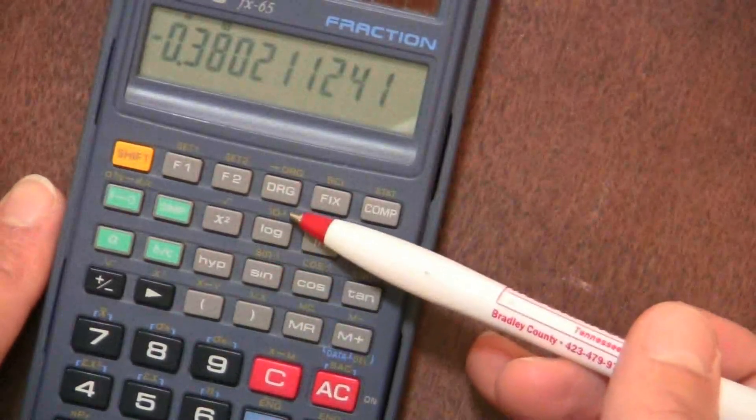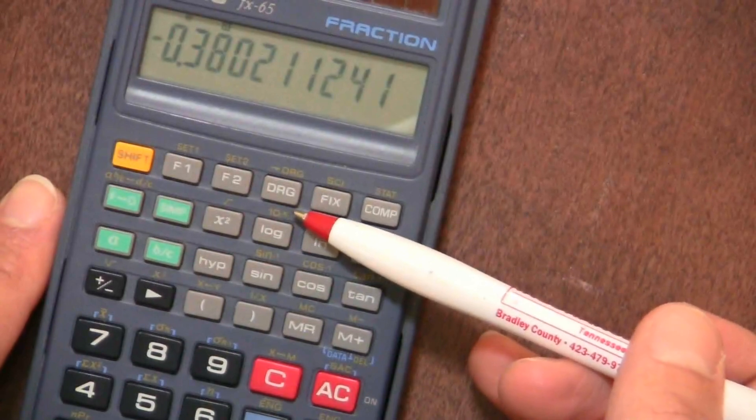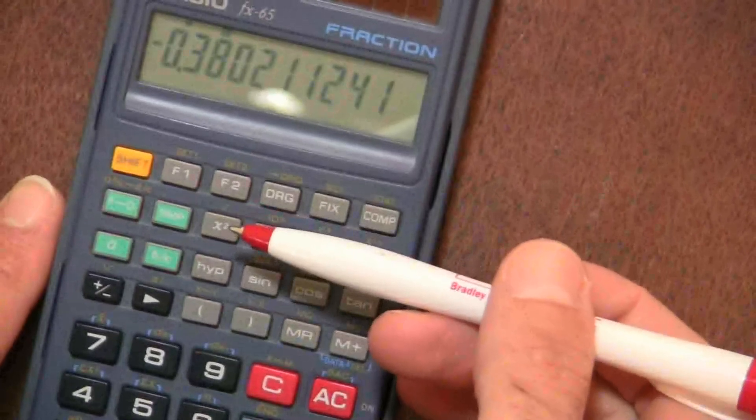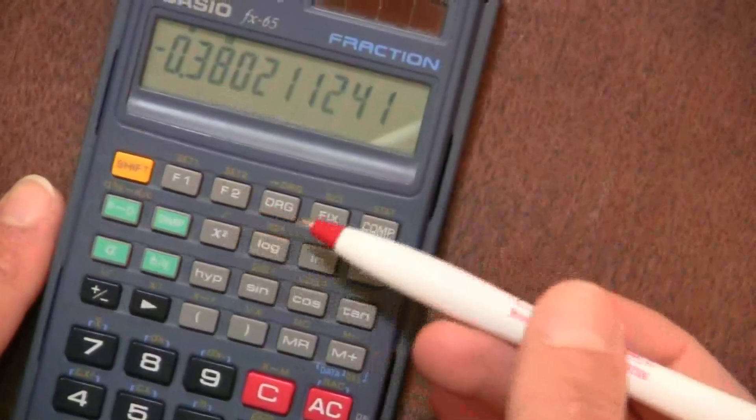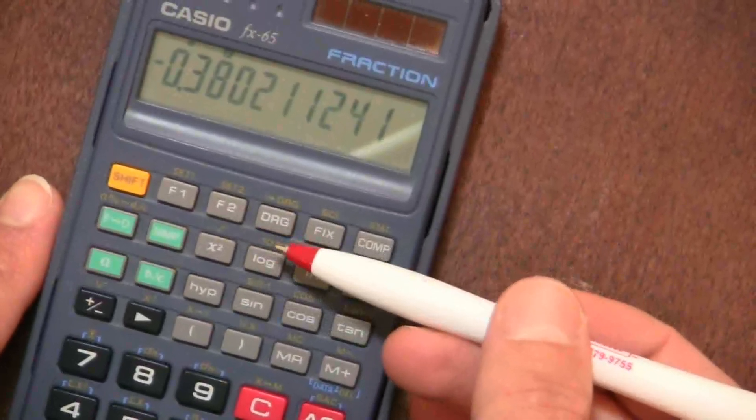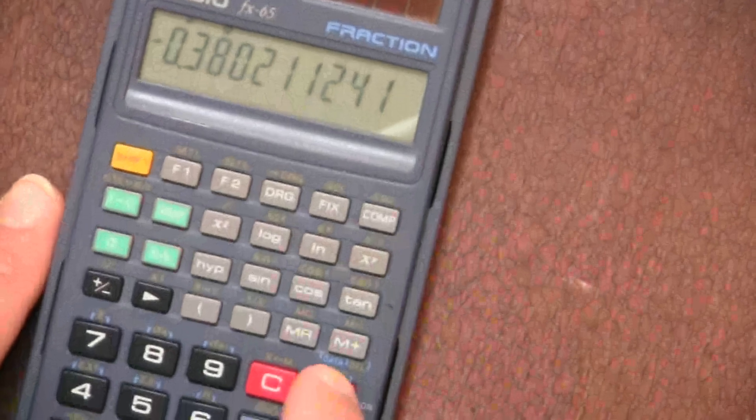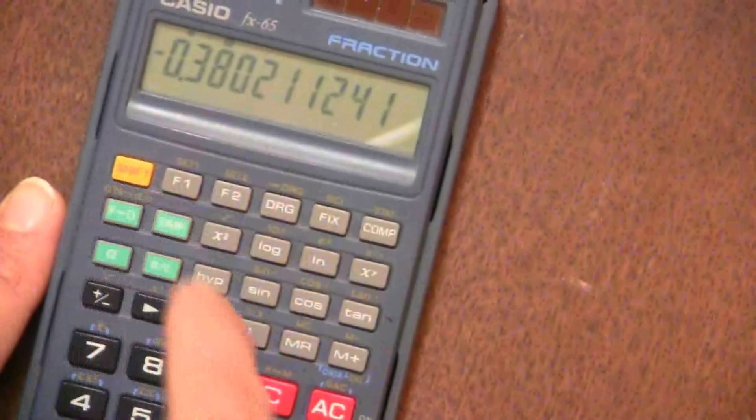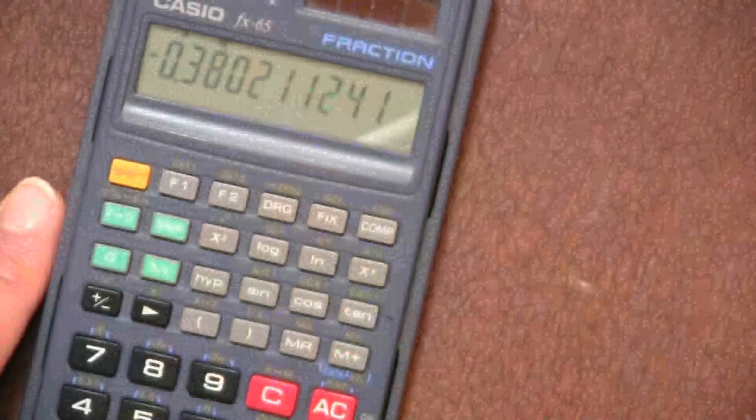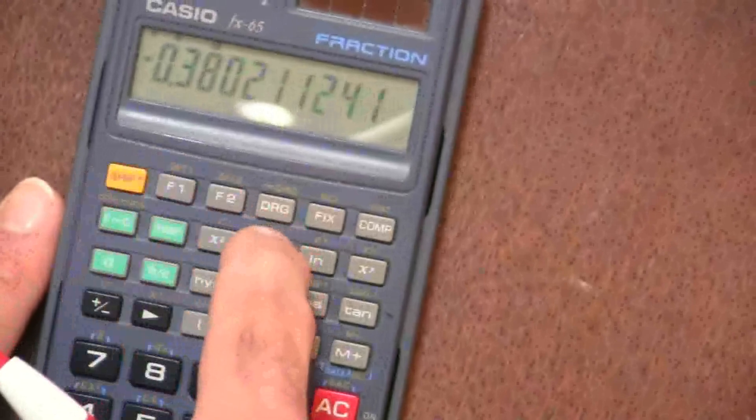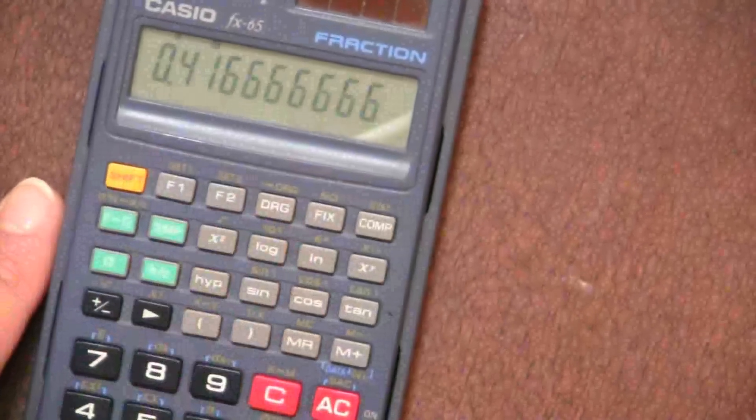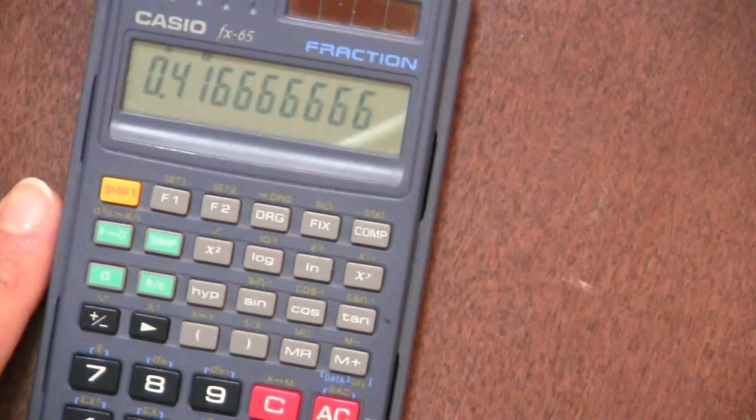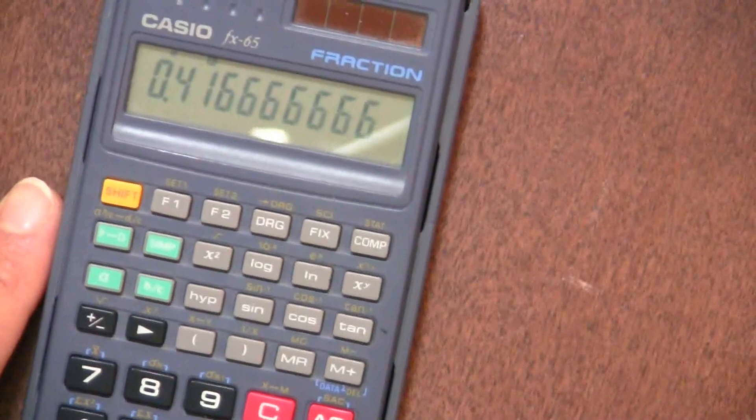Also, just above the log is the 10 to the x function. That's the opposite of the log, just like the square root is the opposite of the square function. So the log is the opposite of 10 to the x, right? So if I take a number like this, and I want 10 to the negative 0.38, what I do is shift to get to that yellow part, and then press that. And you'll see there is my 10 to the negative 0.38 gives me 0.416 repeating.